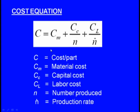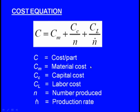The cost equation is: C = C_m + (C_c / n) + (C_l / n), where C is the cost per part, C_m is the material cost, C_c is the capital cost, C_l is the labour cost, n is the number produced, and the second n is the production rate.